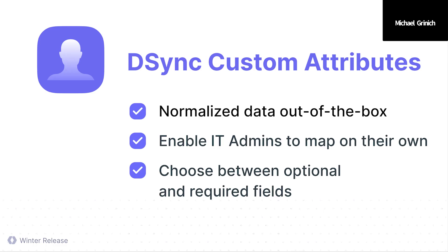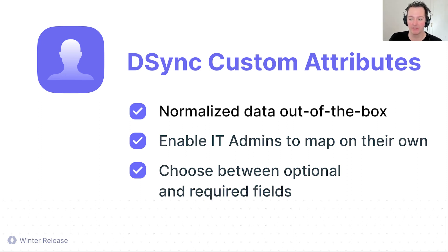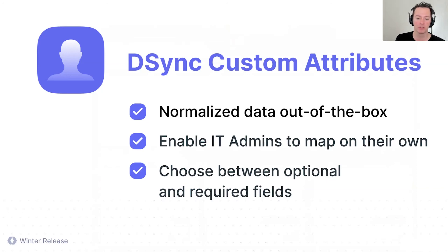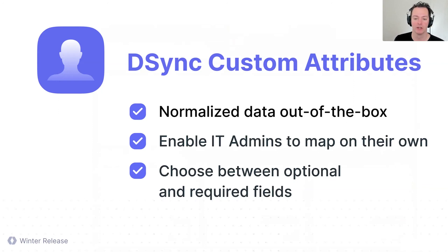That's the demo for directory custom attributes. I'm really excited about this specifically because it really hands off the configuration step to IT, who is the actual one who knows how to map them and knows what the fields should be. The benefit to you is this normalizes the data right out of the box. When you define these custom attributes, you don't need to change your application as you're onboarding customers around those custom fields — they just get mapped in to whatever you had set up originally in your WorkOS configuration. IT admins can do this without even having to email you those values; they can do it right there in the admin portal on their own as they're setting things up.